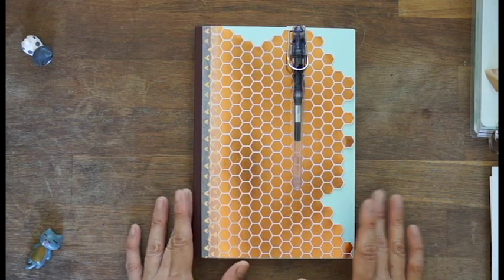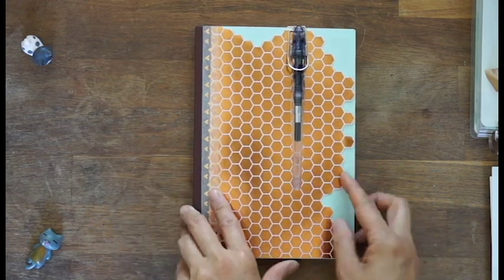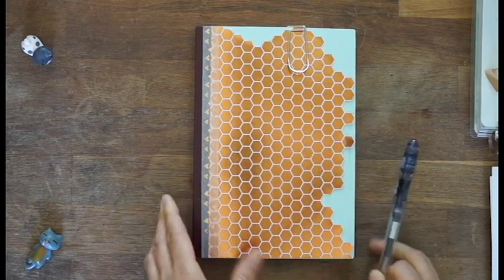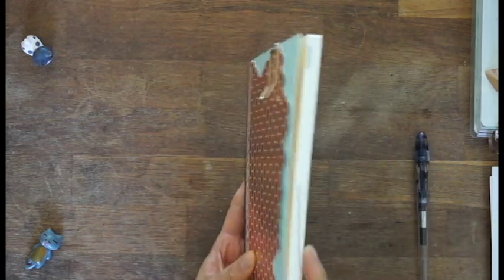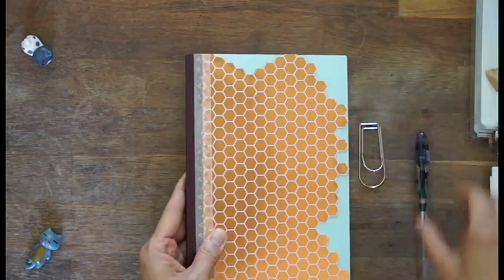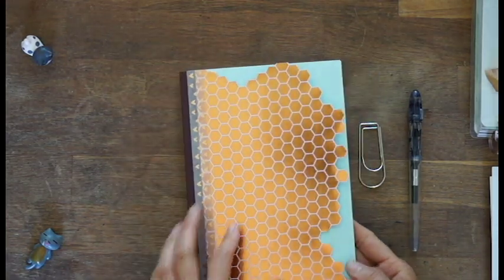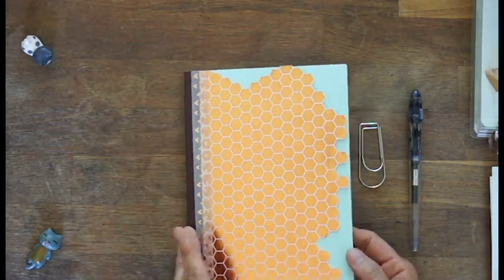I am going to stick with the Hobonichi Cousin planner. You'll see that I have my July through December set up here and I wanted to make it a little prettier by using a piece of scrapbook paper that I cut the edge on to give it a little more design.